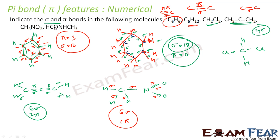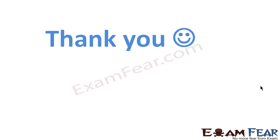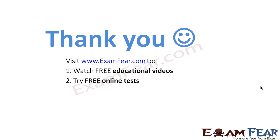Let's take the last one: HCO and HCS3. The structure has single bonds — each is one sigma — and a double bond giving one sigma and one pi, plus additional single bonds. Counting: 8 sigma bonds and 1 pi bond. So to summarize: a single bond is one sigma, a double bond is one sigma and one pi. Thank you — visit examfear.com to watch free educational videos, try free online tests, get the best quality study materials, study from the best tutors and mentors, and much more.